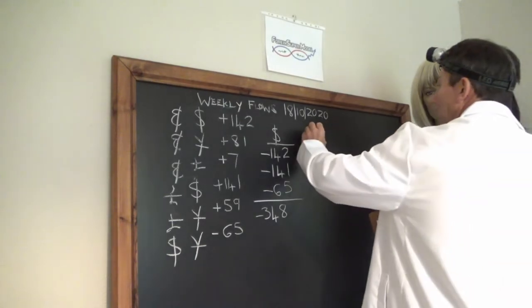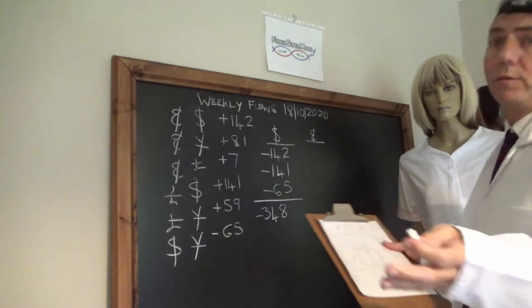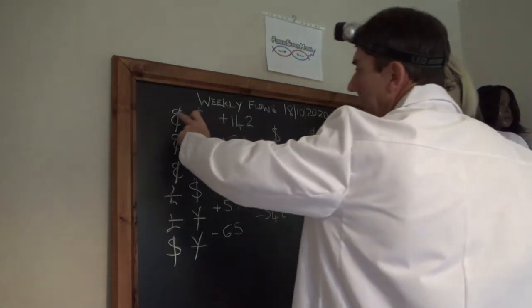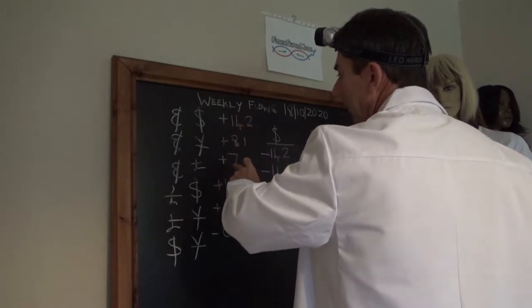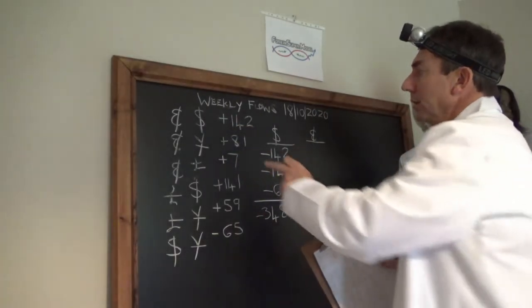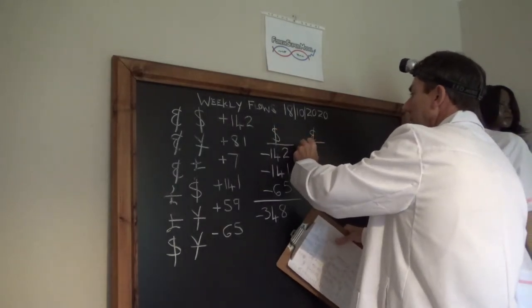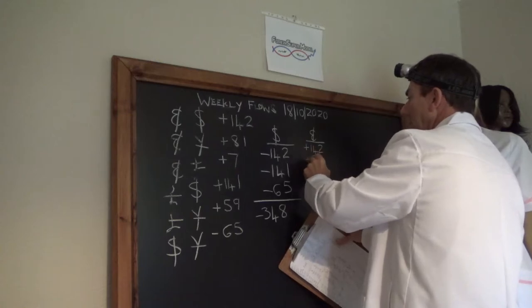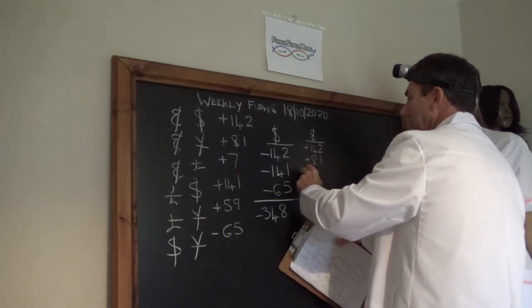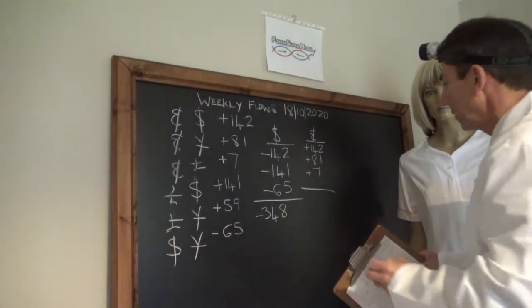Now, we do the same with the euro complex. The beauty of the euro is you can read it straight because it's the first currency. So these figures, you don't have to mess about with the sign. So you can right away write plus 142, plus 81, plus 7. That gives you plus 230.